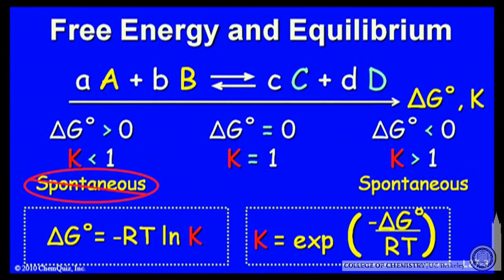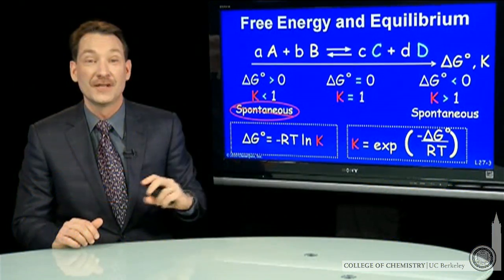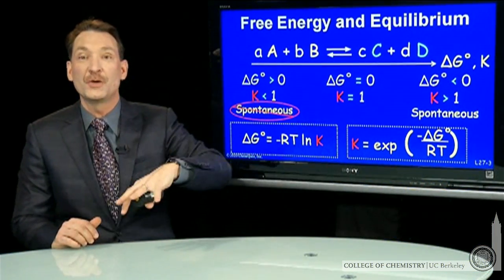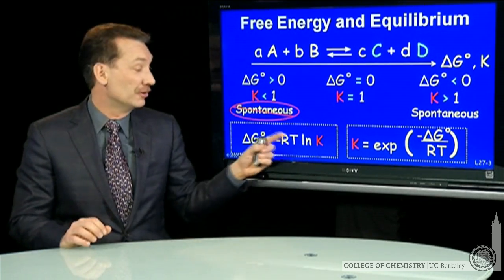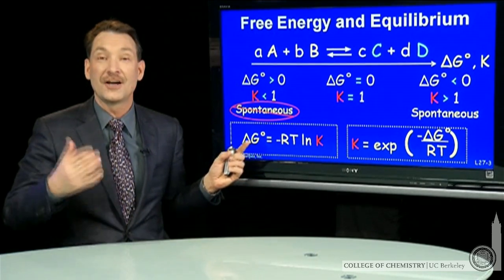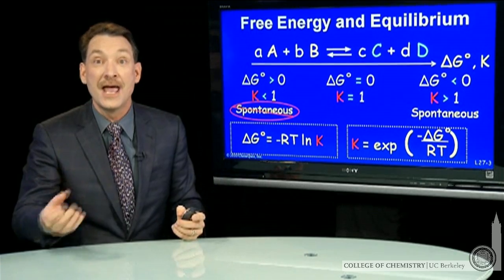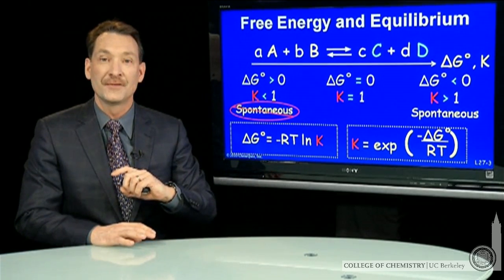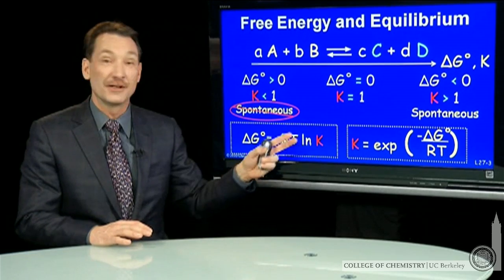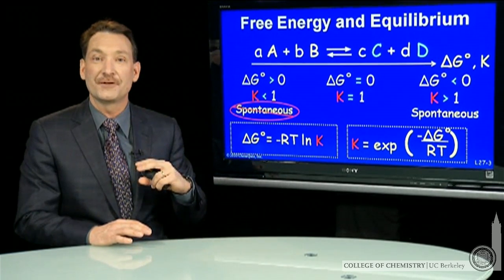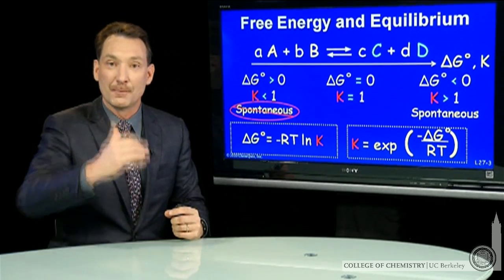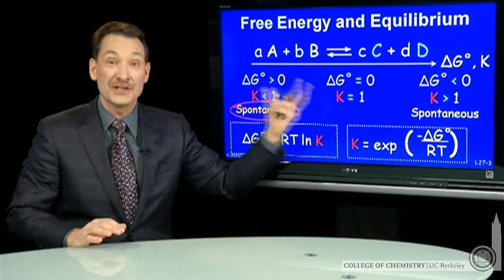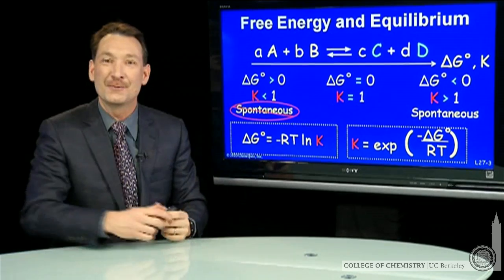You could also solve for K: K equals e to the power of negative delta G standard over RT. These two relationships allow us to switch between free energies and equilibrium constants analytically. We can look up standard state free energies, calculate the standard state free energy difference for a reaction, and calculate the value of K. Tables of standard state free energies give you equilibrium constants and tell you how a reaction is favored at equilibrium — products or reactants. That's the nature of the relationship between the standard state free energy and the equilibrium constant K.